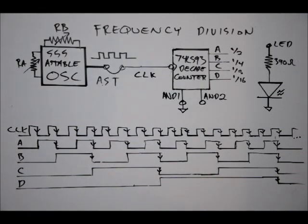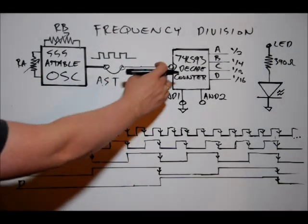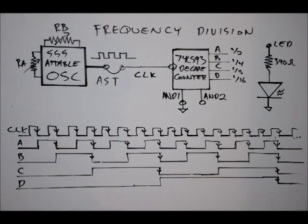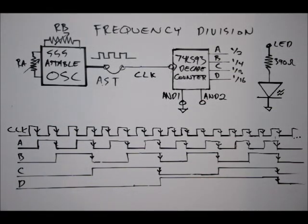So if we connect any of these outputs to an LED, it'll actually show us the frequency division, and we'll see that in a second. So the input of the 74LS93 counter is an NGT input, which means it toggles on the negative edge. So as you can see, I've got little arrows on the falling edges of all of my waveforms here, only on the falling edges.